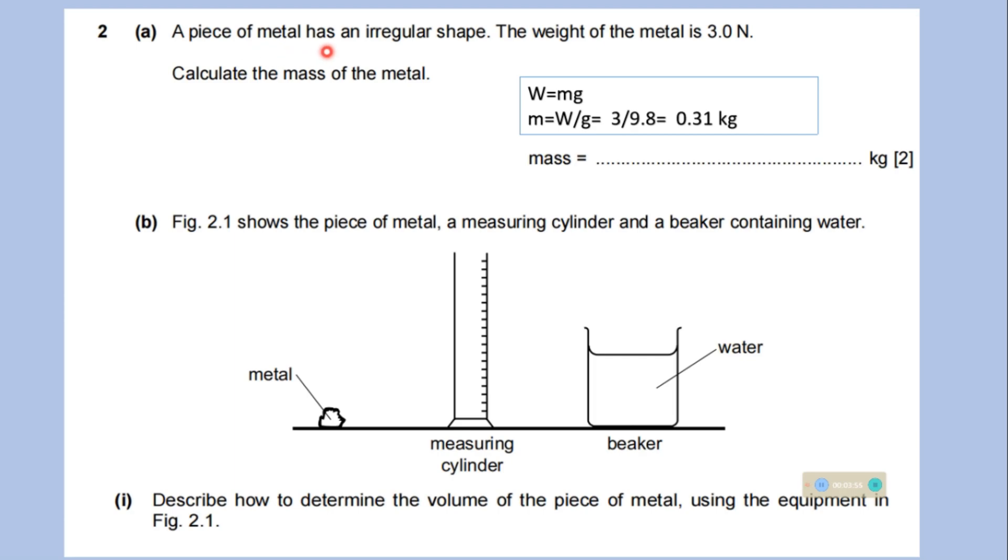A piece of metal has an irregular shape. The weight of the metal is 3 newton. Calculate the mass of the metal. We know that weight is equal to mass multiplied by g. And m is equal to weight w by g is 9.8 meter per second square. So mass is 0.31 kilogram.